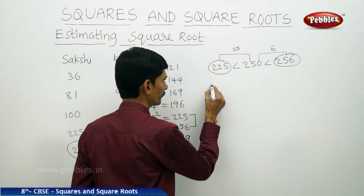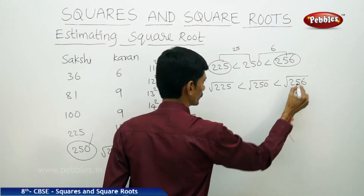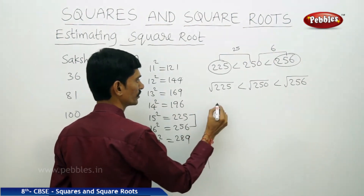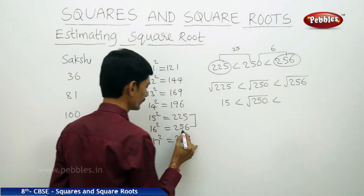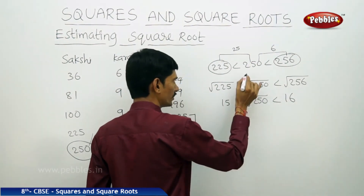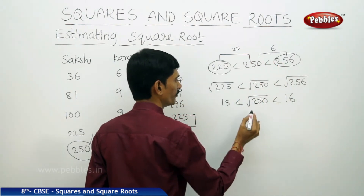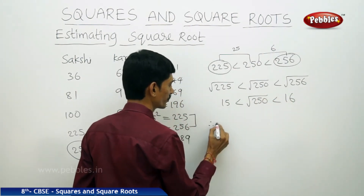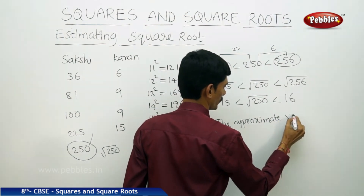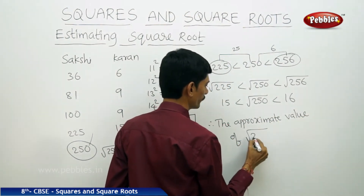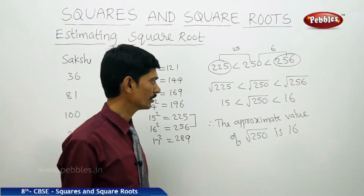We apply the square root: √225 < √250 < √256. The square root of 225 is 15 and the square root of 256 is 16. As 250 is closer to 256, the square root of 250 is also closer to the square root of 256, which means the square root of 250 is closer to 16. Therefore, the approximate value of the square root of 250 is 16. This is not the exact square root but an approximate value.